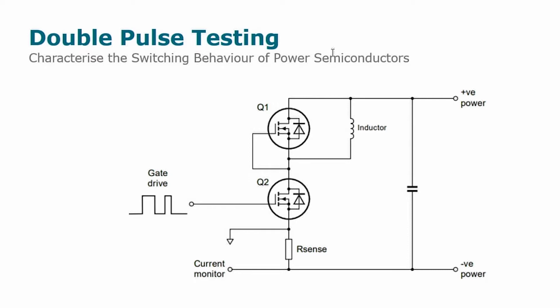It consists of a half-bridge configuration with an inductive load. We have a low side MOSFET used as a switch and a high side MOSFET used as a freewheeling diode, and we give a train of two pulses to the gate of the low side MOSFET. Hence why we call it double pulse testing.